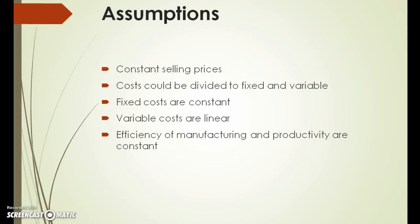CVP analysis works best as an approximation method, hence there are a few assumptions used. First, the reliability of data and linearity of total cost and revenues within a valid scope. Second, constant selling prices — prices are not changing, and costs can be divided into fixed and variable. Fixed costs are constant; variable costs are linear within a valid scope. Costs of manufacturing inputs are constant, efficiency and productivity do not change over time, the analysis includes just one type of product or package, revenues and costs are tied to one volume base, and volume of production equals volume of revenues with no change in intercompany stock levels.